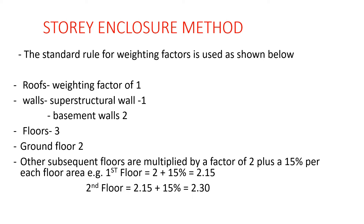For example, for the first floor the weighting factor is 2 plus 15%, which gives us 2.15. Then the second floor takes 2.15 plus a further 15%, giving 3.02 — actually working out to approximately 2.30 progressively. So 2.15 is the weighting factor of the first floor.